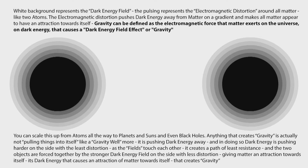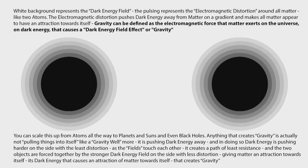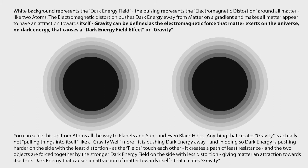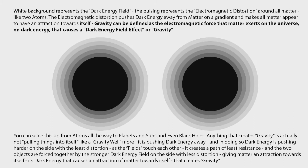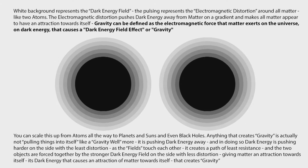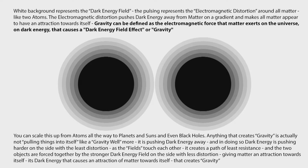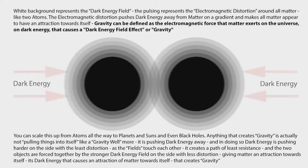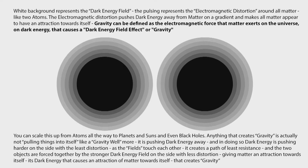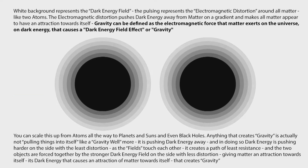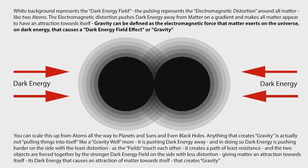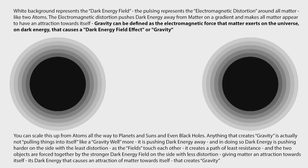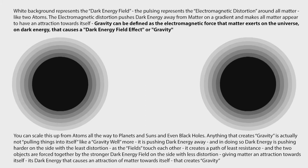The white background represents the dark energy field. The pulsing represents the electromagnetic distortion around all matter, like two atoms. The electromagnetic distortion pushes dark energy away from matter on a gradient and makes all matter appear to have an attraction towards itself. Gravity can be defined as the electromagnetic force that matter exerts on the universe — on dark energy — that causes a dark energy field effect, or gravity. You can scale this up from atoms all the way to planets and suns and even black holes. Anything that creates gravity is actually not pulling things into itself like a gravity well.